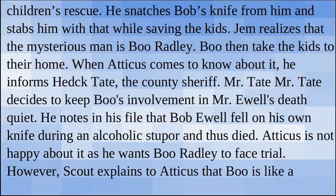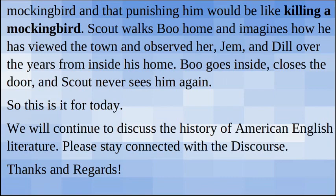Jem realizes that the mysterious man is Boo Radley. Boo then takes the kids to their home. When Atticus comes to know about it, he informs Heck Tate, the county sheriff. Mr. Tate decides to keep Boo's involvement in Mr. Ewell's death quiet. He notes in his file that Bob Ewell fell on his own knife during an alcoholic stupor and thus died. Atticus is not happy about it as he wants Boo Radley to face trial. However, Scout explains to Atticus that Boo is like a mockingbird and that punishing him would be like killing a mockingbird. Scout walks Boo home and imagines how he has viewed the town and observed her, Jem and Dill over the years from inside his home. Boo goes inside, closes the door and Scout never sees him again.